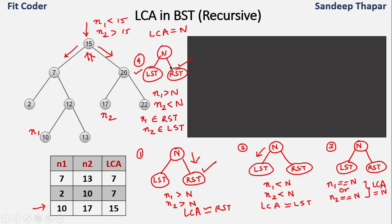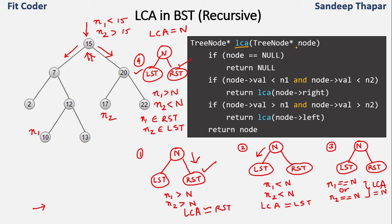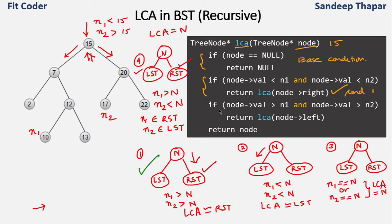Let's look at the pseudocode. The function LCA takes a tree node parameter and returns a tree node pointer. The first call is for the root node. We check if the node is null as the base condition. If both N1 and N2 are greater than the node, we recurse into the right subtree. If both are less, we recurse into the left subtree. Otherwise, in the third and fourth scenarios, the LCA is the current node, so we return it.